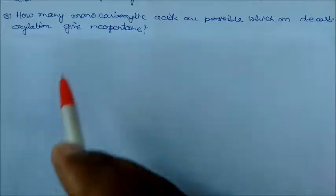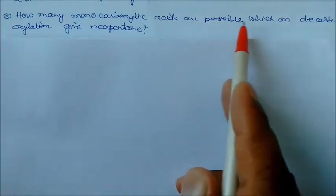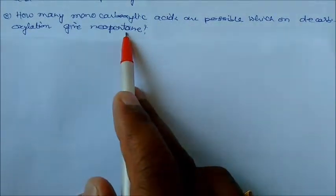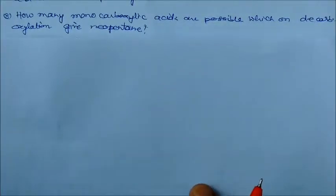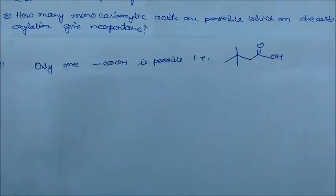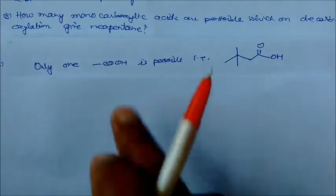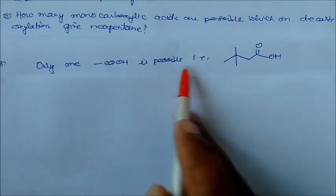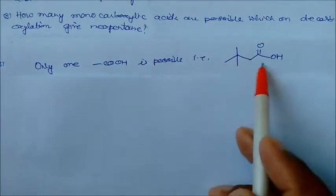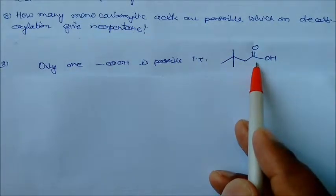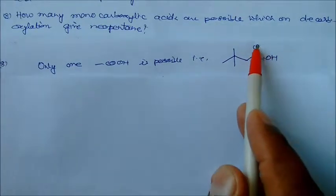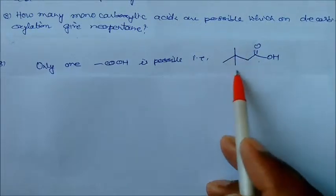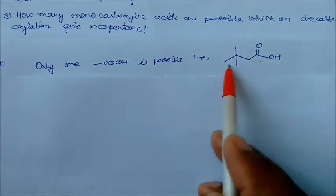How many monocarboxylic acids are possible which on decarboxylation give neopentane? There is only one such monocarboxylic acid possible. On decarboxylation, this compound releases CO₂ and produces neopentane.